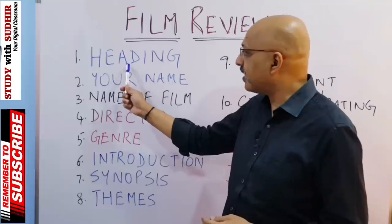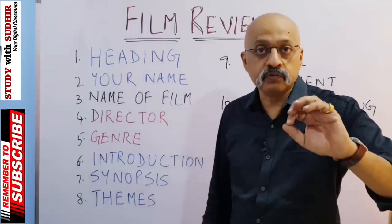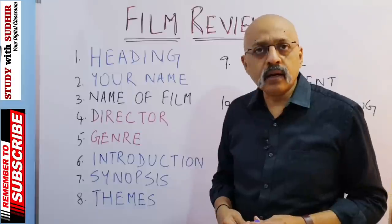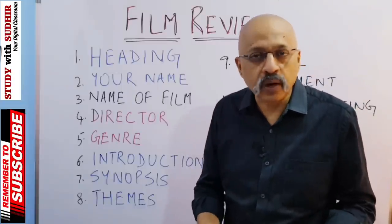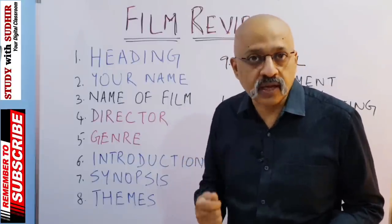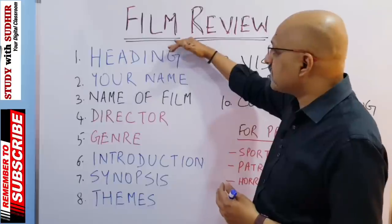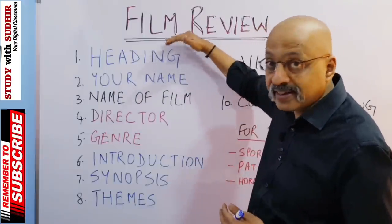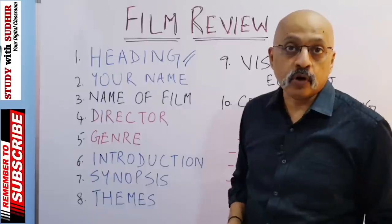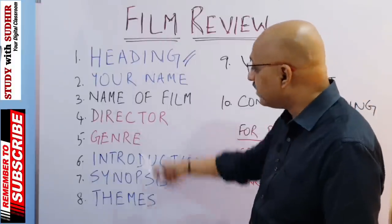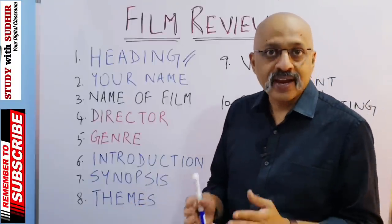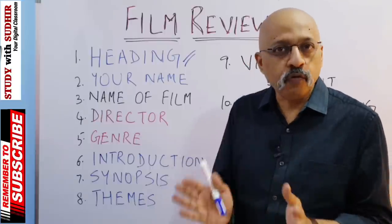The first point you need to know is to write a heading. This is important because the heading of the film review is how it would get published, so it has to be catchy. It cannot be something like 'Dangal — an interesting sports film.' That's very boring. You could highlight the father-daughter relationship: 'Daughters say chakde in Dangal' — something which is a little catchy. Your heading should make the reader actually want to read the film review. It does not have to be very long — about four to five words, maximum six words, would be best.